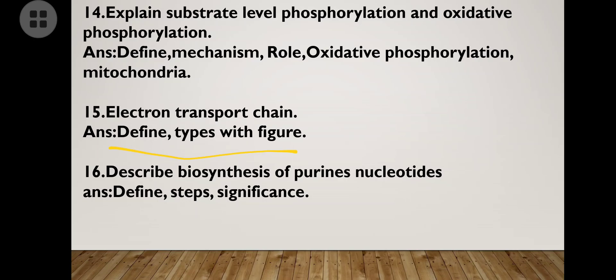Sometimes they ask separately about substrate level phosphorylation or oxidative phosphorylation. For oxidative phosphorylation, write the electron transport chain — define it, then go for the types: Complex I, Complex II, Complex III, and Complex IV with figures and significance. Note where the electron transport chain occurs — in respiration and in the regulation of body temperature.